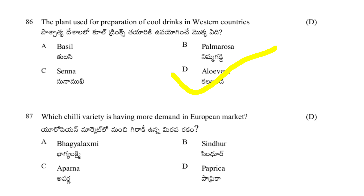Which chilli variety is having more demand in European markets? Options: Bagi Lakshmi, Sindur, Aparna, or Paprika. The answer is paprika — paprika varieties have high demand in European markets.